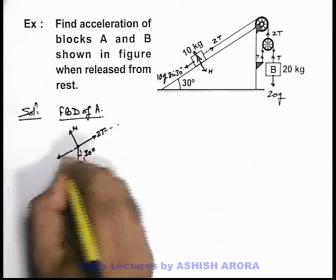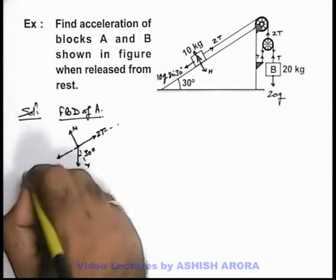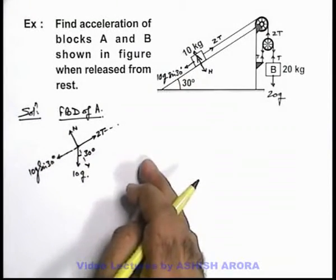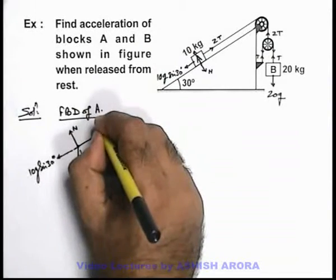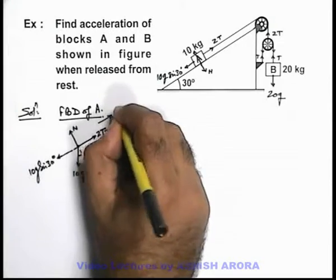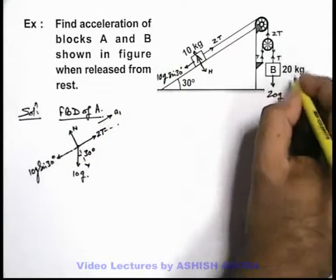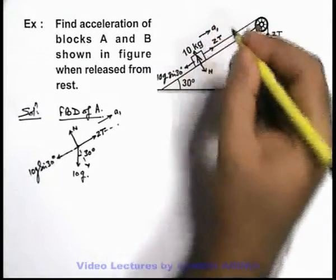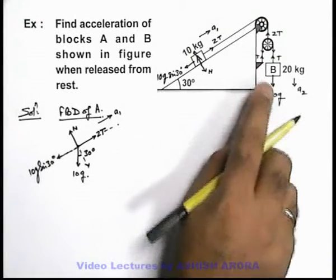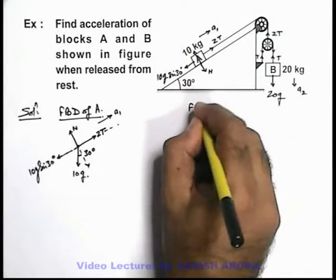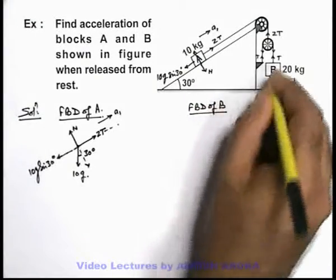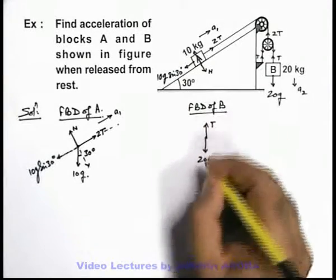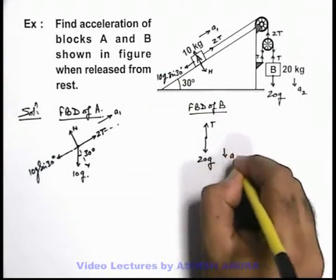So we can see along the direction of motion, the component of its weight will be 10g sin 30 degrees. Block A can be considered to be going up with acceleration a1. For block B, say it is coming down with acceleration a2. For block B the free body diagram shows it is experiencing its weight 20g in the downward direction, and tension T in the upward direction. It is coming down with acceleration a2.